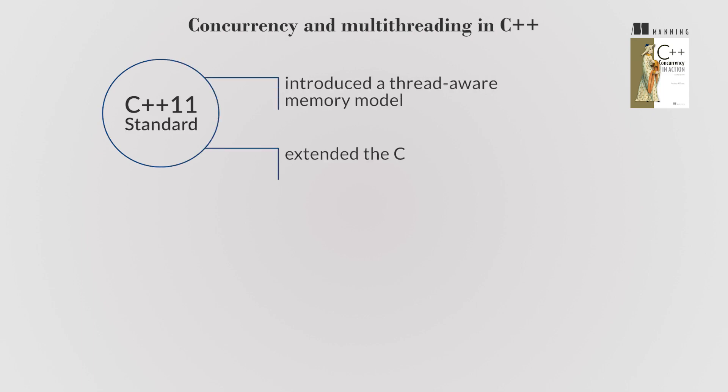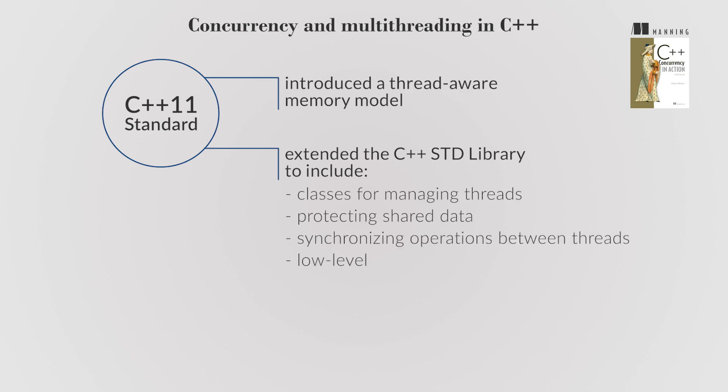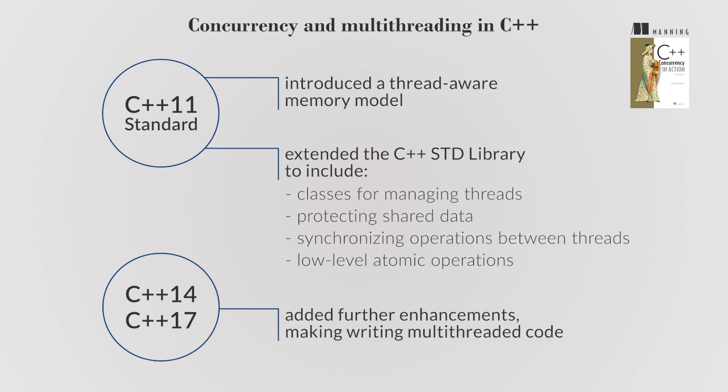The standard extended the C++ library to include classes for managing threads, protecting shared data, synchronizing operations between threads, and low-level atomic operations. C++14 and C++17 added further enhancements, making writing multi-threaded code simpler.